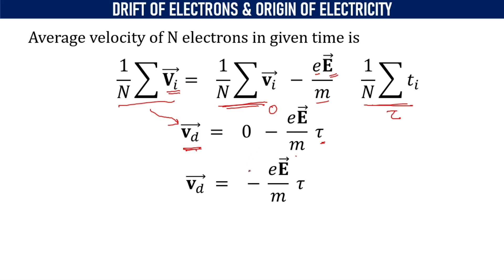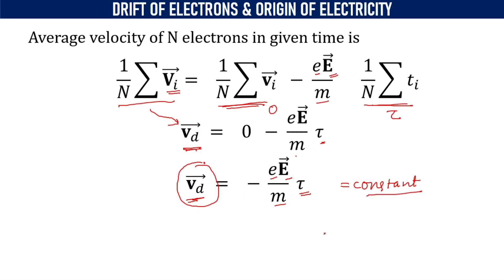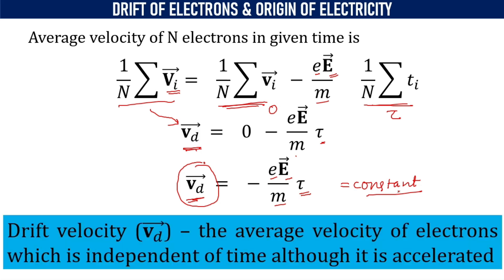The speciality of the drift velocity is that it will be a constant. The reason is simple: relaxation time depends on the nature of the material for a given temperature, and the charge and mass of the electron are always constant. For a uniform electric field, E is also constant. Hence the value of Vd is constant. Although the electrons are being accelerated, the final velocity remains constant. Hence we can define drift velocity as the average velocity of electrons, which is independent of time, although it is accelerated.